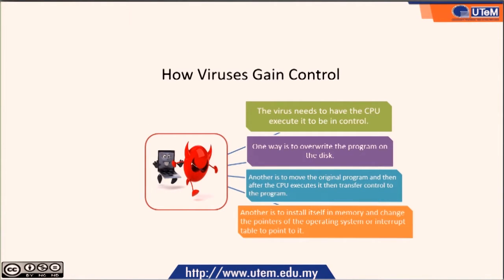Now we explore how viruses gain control. The virus needs to have the CPU execute it to be in control. One way is to override the program on the disk. Another is to move the original program and then, after the CPU executes, transfer control to the program. Another way is by installing itself in memory and changing the pointer of the operating system or interrupt table to point to it.